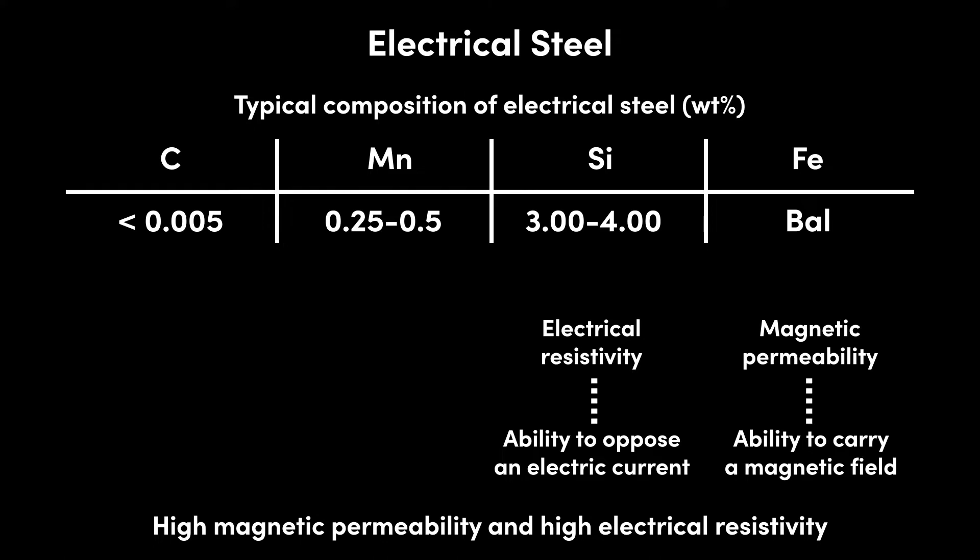The combination of high magnetic permeability and high electrical resistivity is tricky to achieve since magnetism and electricity go hand in hand, both relying on the movement of electrons. However, in electrical steel, iron provides high magnetic permeability as one of the few permanent magnetic materials. Unlike other permanent magnetic materials such as cobalt, iron is also highly abundant and relatively cheap. Silicon is then added to the iron, since silicon increases the electrical resistivity while having minimal effect on iron's magnetic permeability.